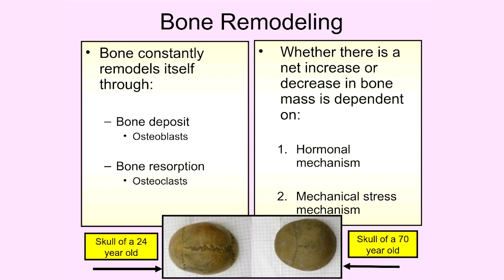As adults, we have bone being produced and deposited at the same time as bone being resorbed — broken down, releasing calcium to the blood. Because of this ongoing bone remodeling, your skeleton completely changes every 10 years. The bones you have now are not the same bones you had 10 years ago — all of that bone has been replaced. And the bone you have now will all be replaced in another 10 years.